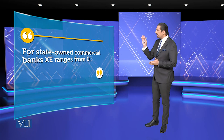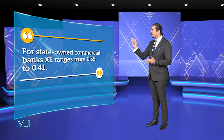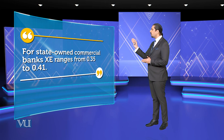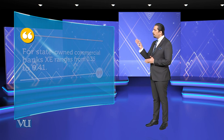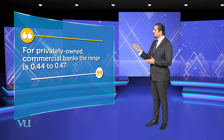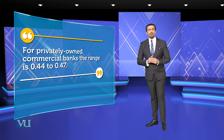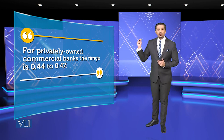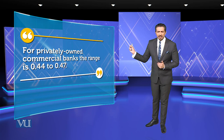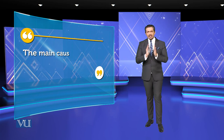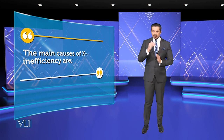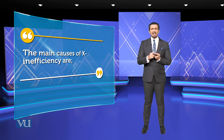Normally in China, state-owned enterprises use state-owned commercial banks. For the state-owned commercial banks, the X-efficiency was ranged at 0.35 to 0.41. For the privately owned commercial banks, the range was about 0.44 to 0.47. When results were examined within this range, findings emerged.